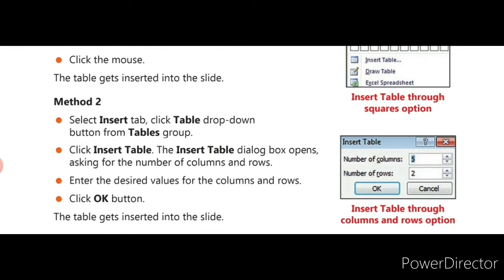Method 2: Select the Insert tab. Click the Table drop-down button from the Tables group — the same first step. Then click Insert Table. The Insert Table dialog box opens, asking for the number of rows and columns. Enter the desired values for columns and rows, then click OK. In this method you insert the table using the Insert Table dialog box.